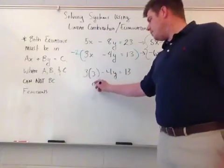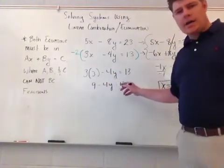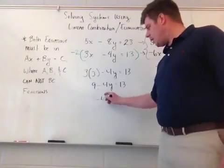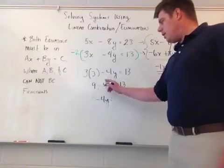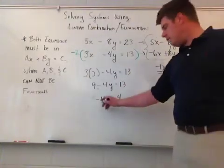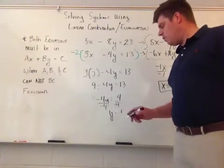3 times 3 is 9. So 9 minus 4y equals 13. Minus 9 from both sides to get this 9 out of there. Don't forget this negative here. I get negative 4y. 13 minus 9 is 4. And the last thing I need to do is divide by negative 4. Divide by negative 4. You get y equals negative 1.